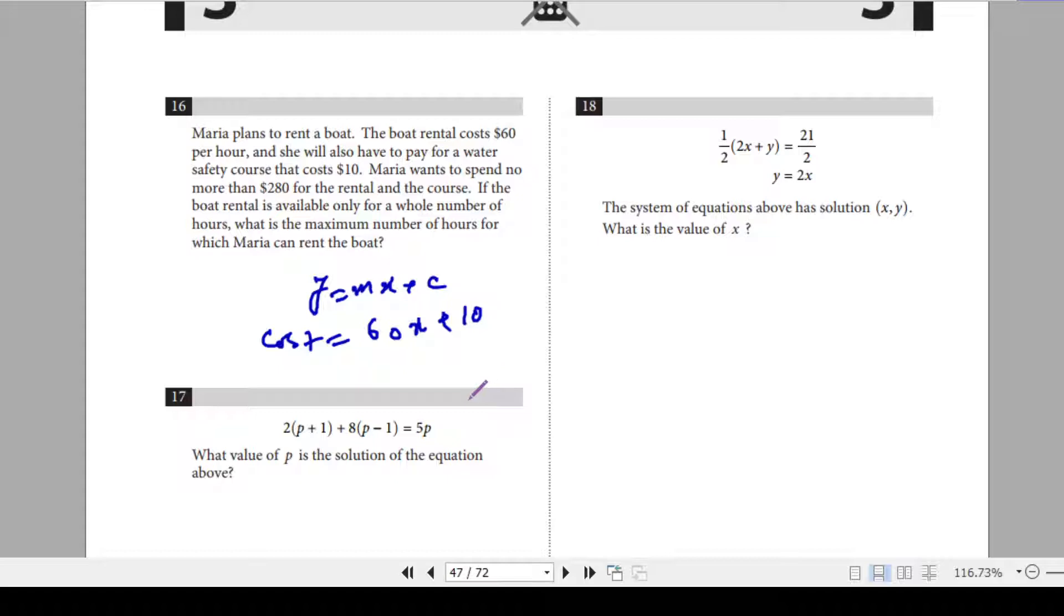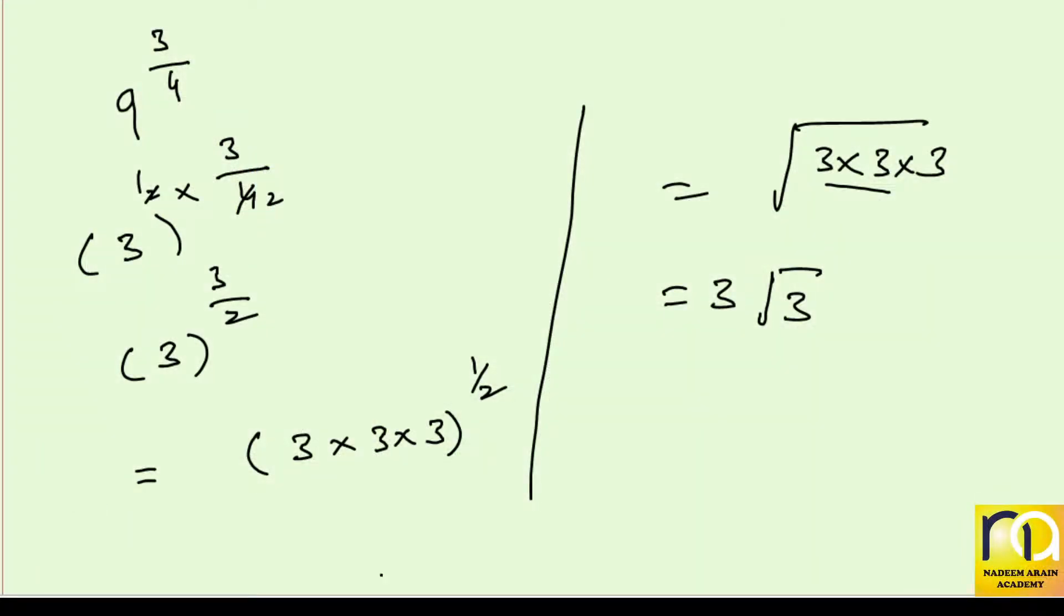And according to the question, this cost should not be more than $280. So 60x plus 10 should not be more than $280. It should be equal to or less than $280.